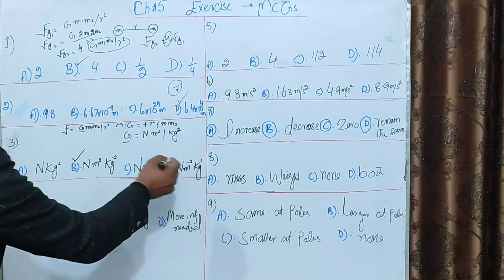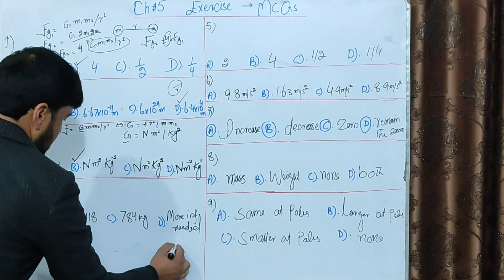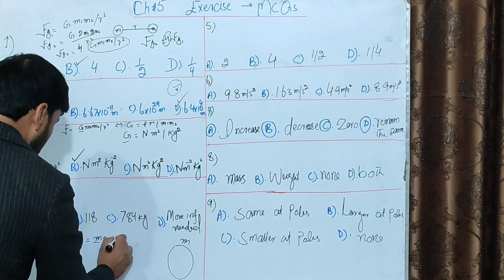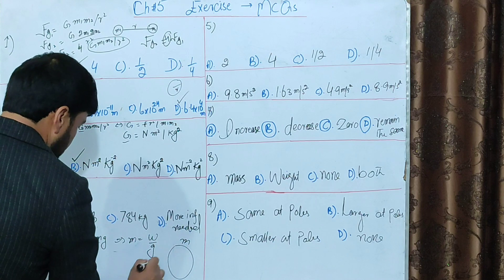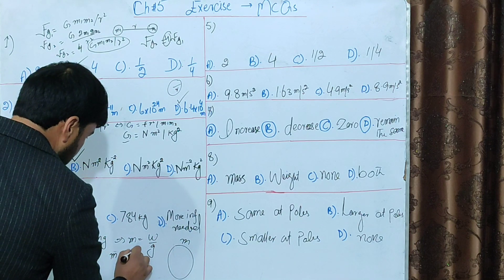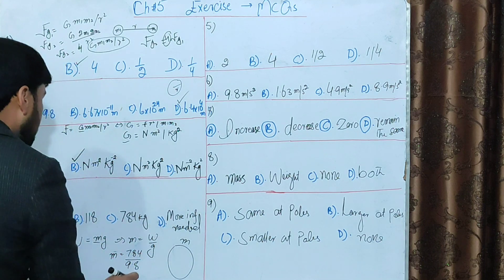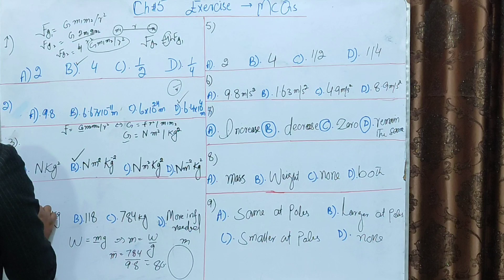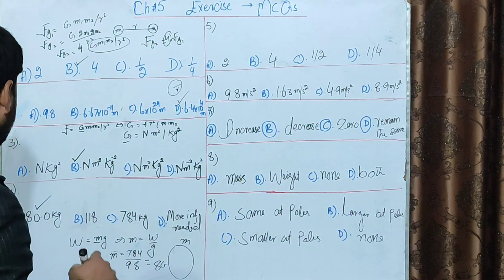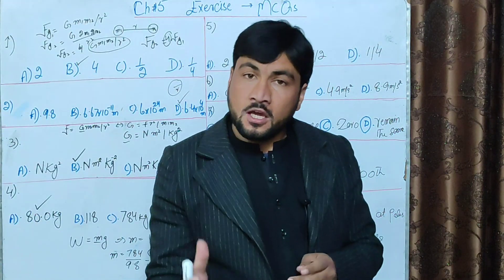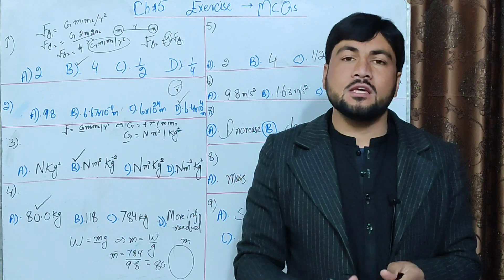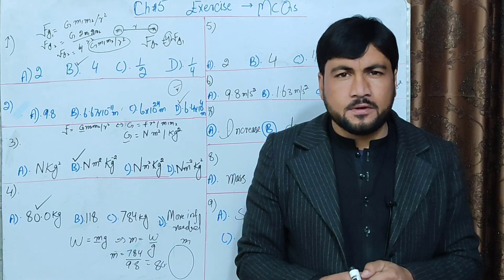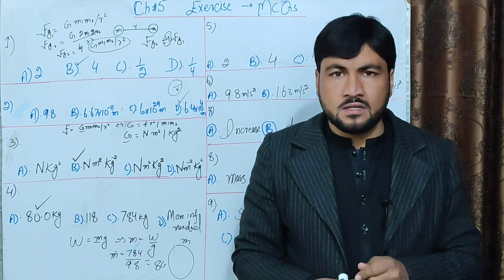The weight is 704 newtons divided by g (approximately 9.8), giving a mass of around 8 kg. Whether the object is on Mercury, Saturn, Neptune, or Mars, the mass remains the same — approximately 8 kg.